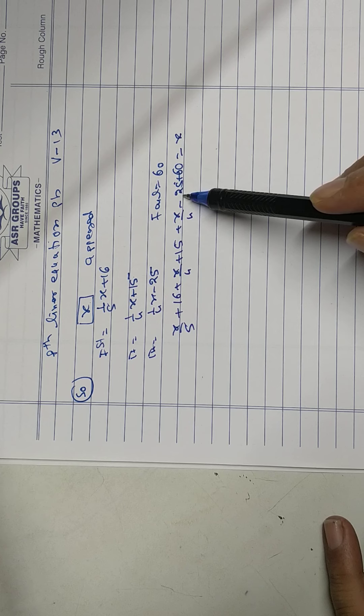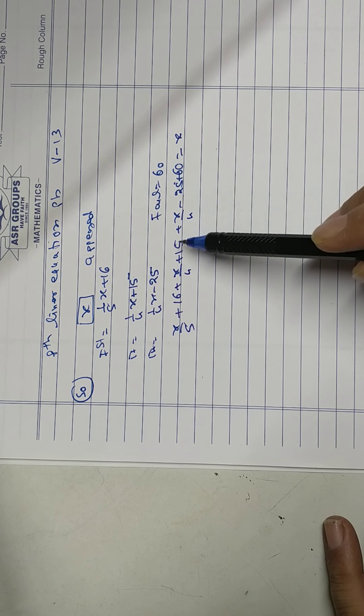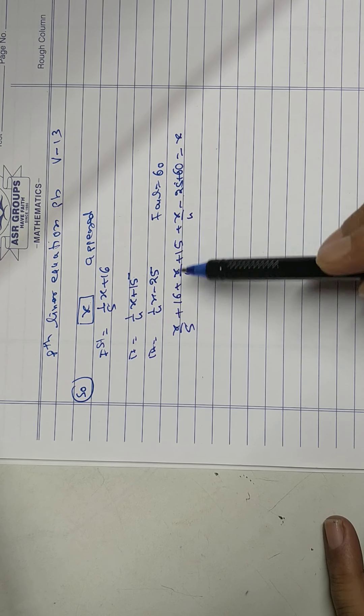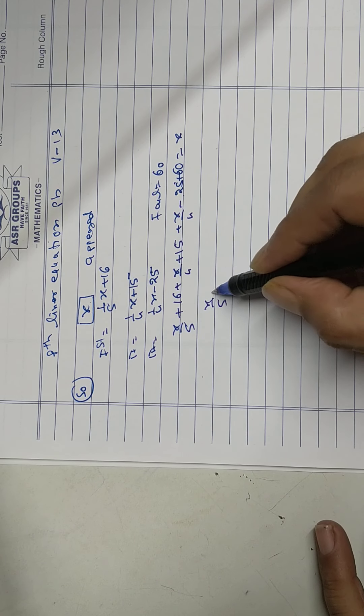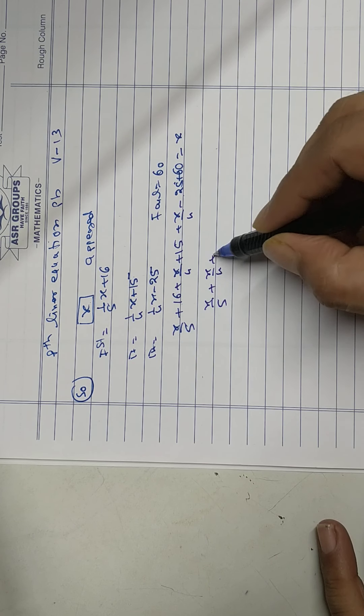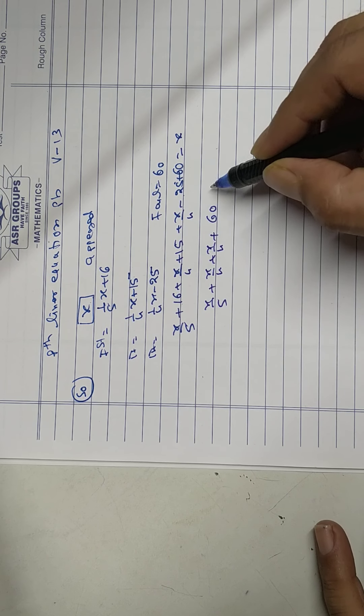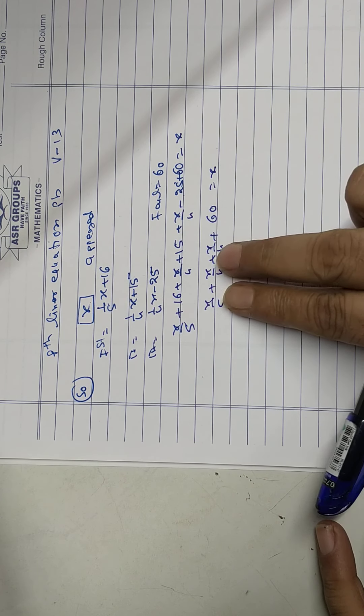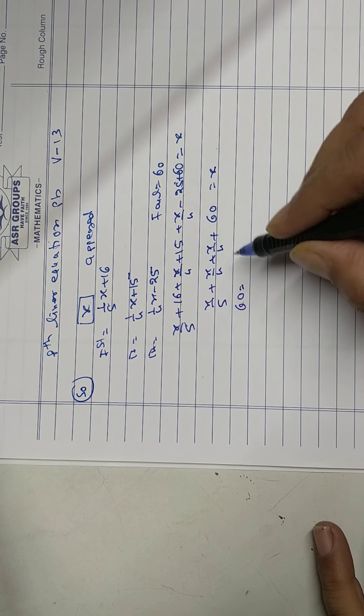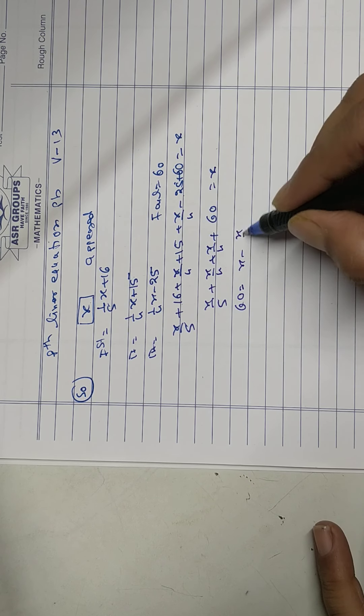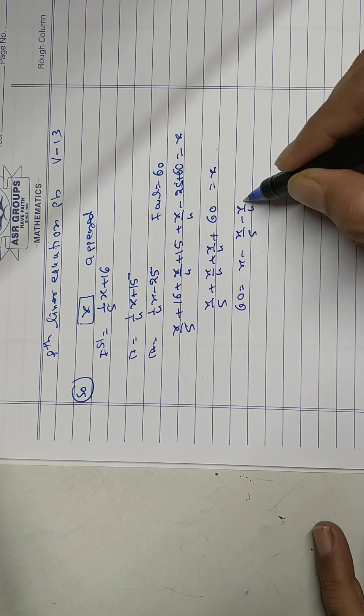60 minus 25 is 35, 35 plus 15 is 50, 60. So x upon 5 plus x upon 4 plus 60 equal to x. All this treated that side. 60 equal to x minus x upon 5, x upon 4 minus x upon 4.